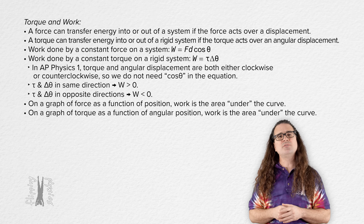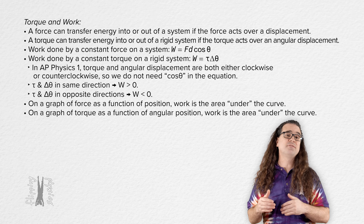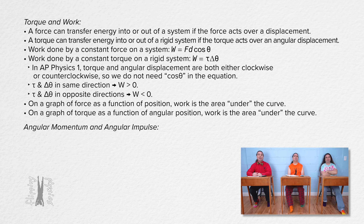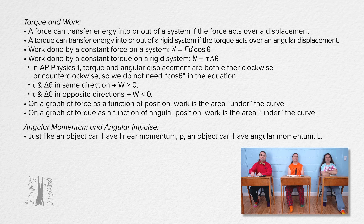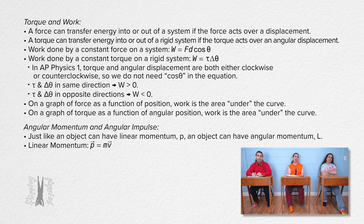Bobby, please do the same thing Bo just did only for linear momentum. Just like an object can have linear momentum, lowercase p, an object can have angular momentum, uppercase L. Linear momentum equals mass times velocity, where linear momentum and velocity are vectors. Angular momentum equals rotational inertia times angular velocity, where angular momentum and angular velocity are vectors.